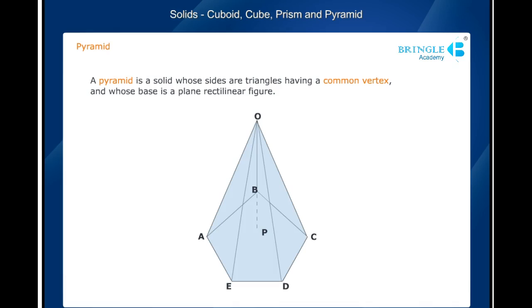A pyramid is called regular when its base is any regular figure. A pyramid is called a right pyramid when the foot of the perpendicular from the vertex to the base is the midpoint of the base.